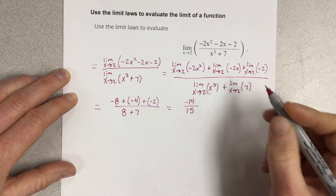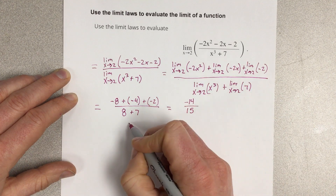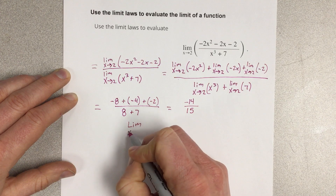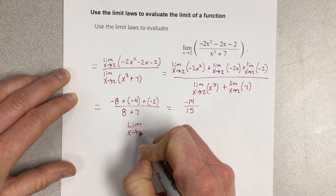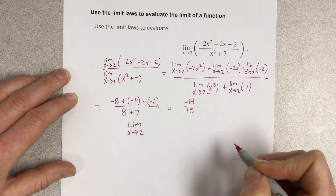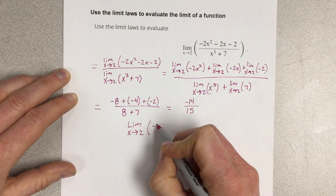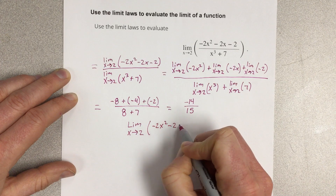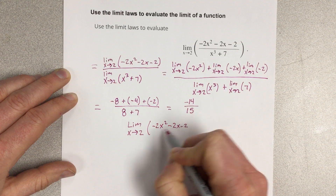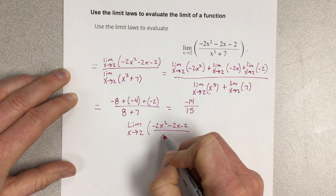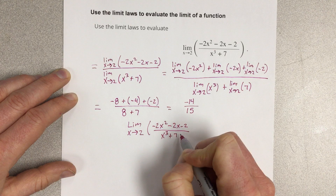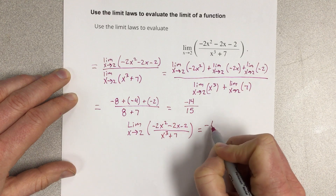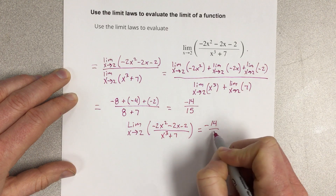So we can say that the limit as x approaches 2 of negative 2x squared minus 2x minus 2, divided by x cubed plus 7, is equal to negative 14 over 15.